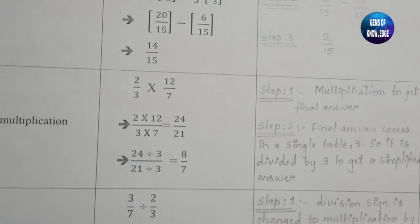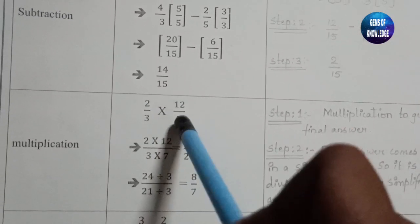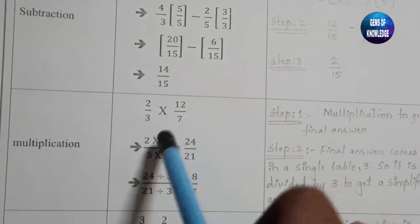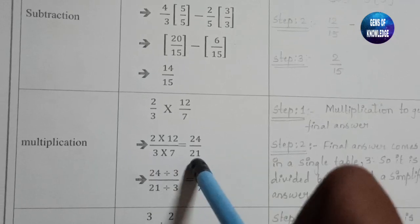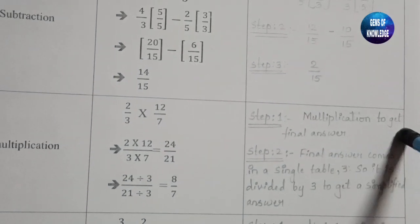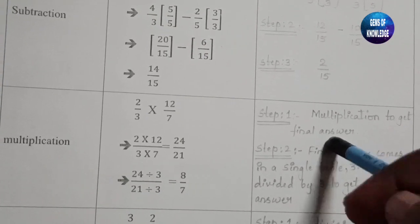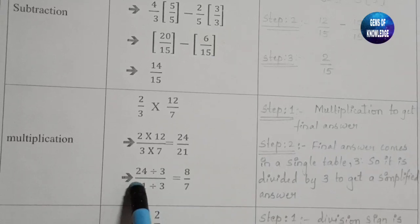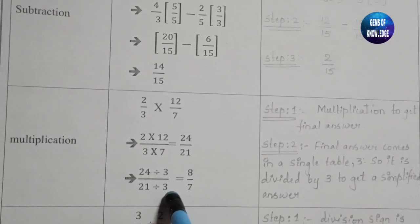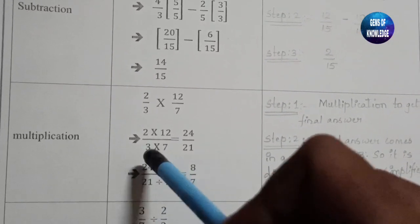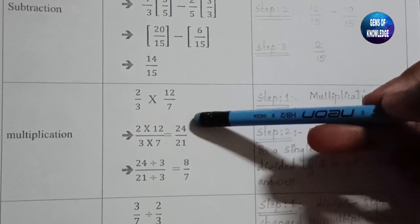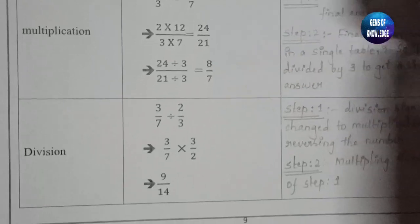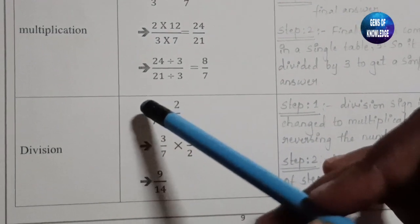For multiplication: 2/3 × 12/7 — multiply numerators and denominators directly: 2×12 = 24 and 3×7 = 21, giving 24/21. Then simplify by dividing by 3: three eights are 24 and three sevens are 21, so the final answer is 8/7.